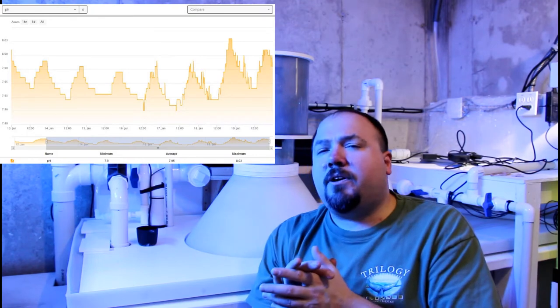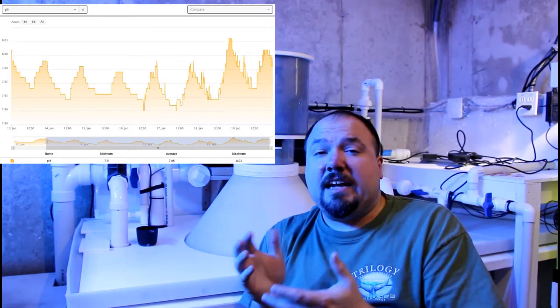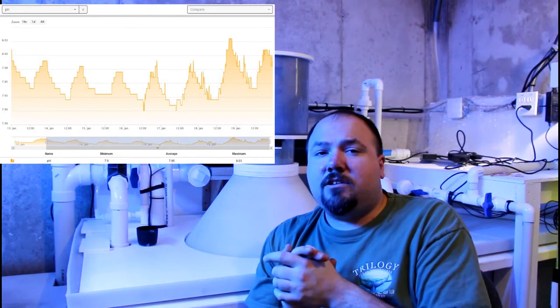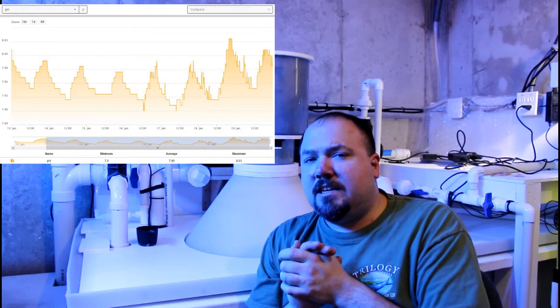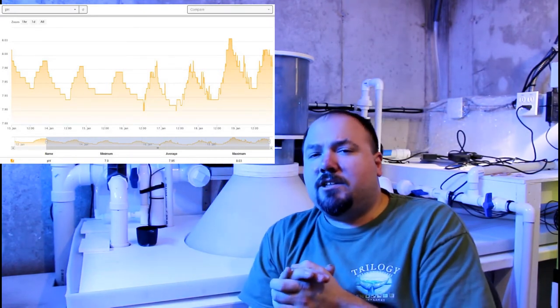It might peak to about 8.0, but usually it's staying in the 7.8 to 7.9 range on most days. But when I added the UV sterilizer, I started to see a lot of jaggedness in the pH and it's actually risen a little higher in a couple of days.